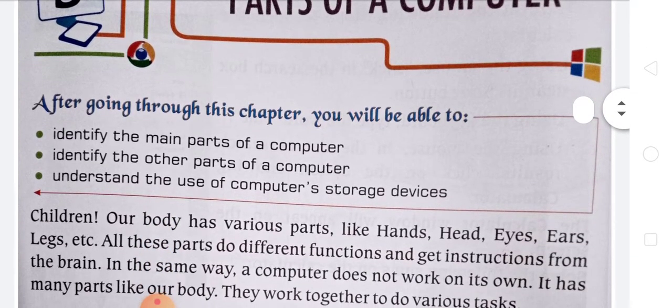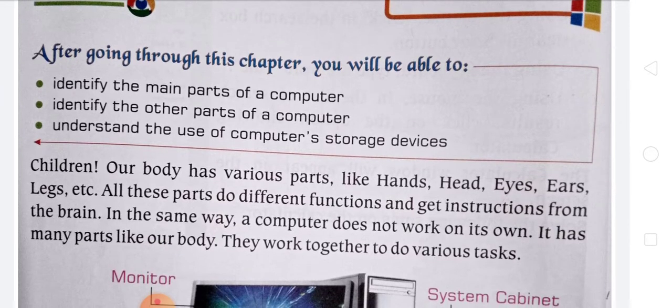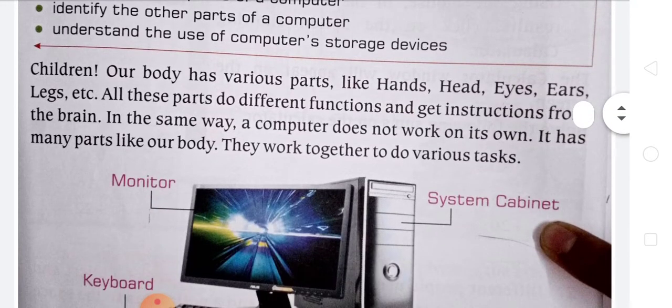Children, just like our body parts — hands, head, eyes, ears, and legs — a human being has all these body parts with different functions, and they get instructions from our brain to do their particular work. In the same way, a computer does not work on its own. It has many parts like our body, and they work together to do various tasks.